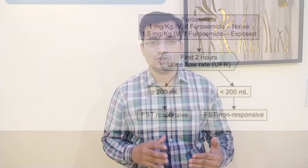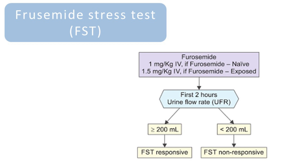However, there is a furosemide stress test where a patient with oliguria is administered 1 to 1.5 mg/kg of furosemide, and after 2 hours urine output is measured. If it is more than 200 ml, this indicates there is no problem with the tubular integrity inside the nephron.